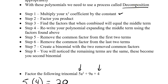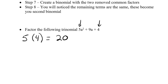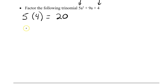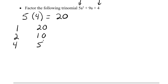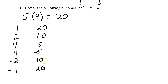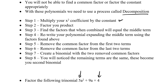Step two: factor the product. Our product was 20, so we list all factor pairs. Going down the page works well here. What numbers multiply to give 20? We get 1 and 20, 2 and 10, and 4 and 5. For decomposition it's important to remember the negative versions as well: negative 4 and negative 5, negative 2 and negative 10, and negative 1 and negative 20 — all give positive 20. Step two is done.